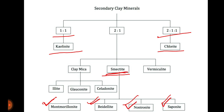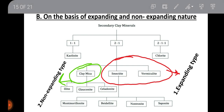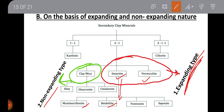On the basis of expanding and non-expanding nature, silicate clay minerals are divided into two types: expanding type and non-expanding type. Examples of expanding type are smectite and vermiculite — the smectite group includes montmorillonite, beidellite, nontronite, and saponite. Non-expanding type examples are illite and mica.